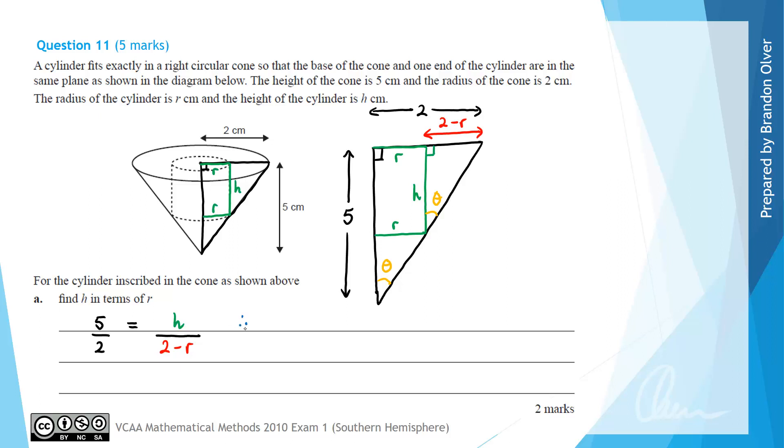So when we rearrange that we can multiply by 2 take r and we would get h is equal to 5 over 2 times (2 subtract r). And now we could but we don't have to expand out that bracket, so it would be 5 times 2 is 10 subtract 5 times r all divided by 2, and that is the expression for h in terms of r for this question.